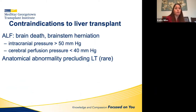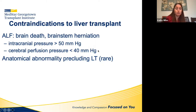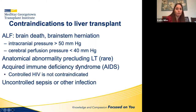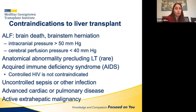Absolute contraindications to transplant: brain death (most relevant in ALF), brain stem herniation with high intracranial pressure >50 or low cerebral perfusion pressure, anatomical abnormalities (very rare nowadays), AIDS with low CD4 and AIDS-defining illnesses (HIV on HAART is not a contraindication), uncontrolled sepsis or other infections, severe cardiac or pulmonary disease, and active extra-hepatic malignancy. Any center across the nation would not transplant patients with these conditions.